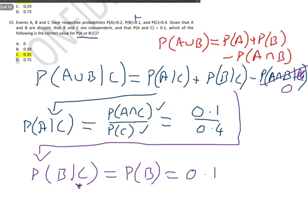So all we need now is the probability of A given C plus the probability of B given C. So the whole thing is equal to 0.1 over 0.4 which is 0.25 plus 0.1 which equals 0.35.